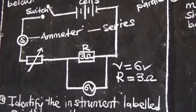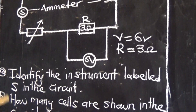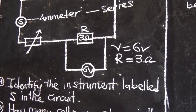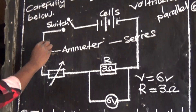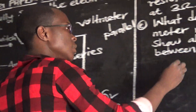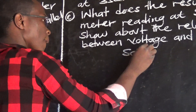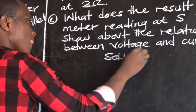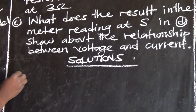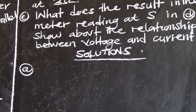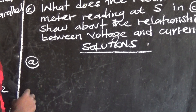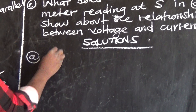So we say: identify the instrument labeled S in the circuit diagram. Our answer is: S is our ammeter.